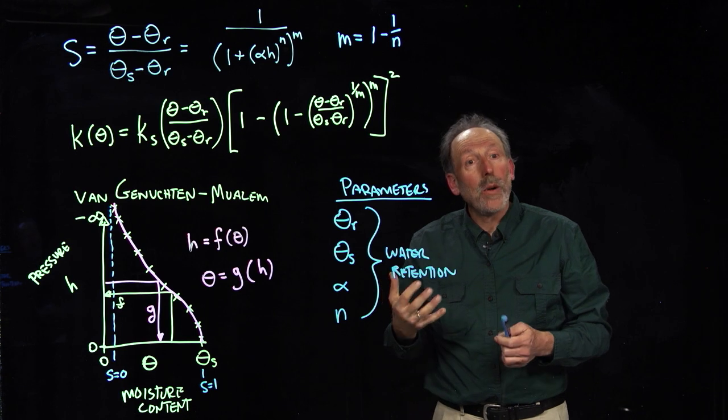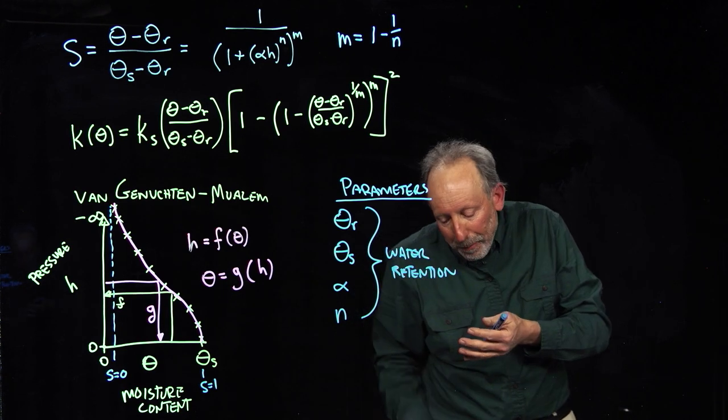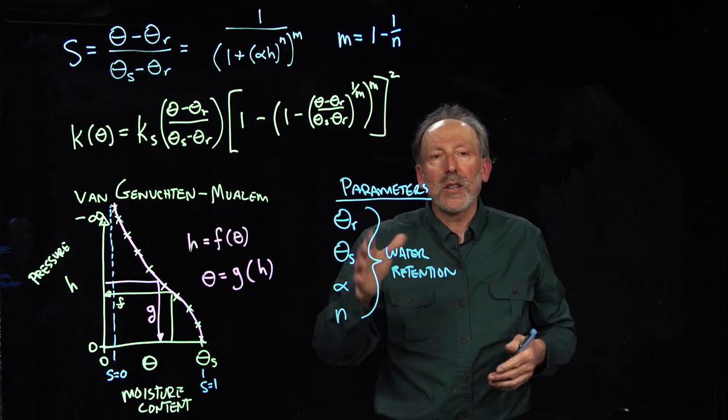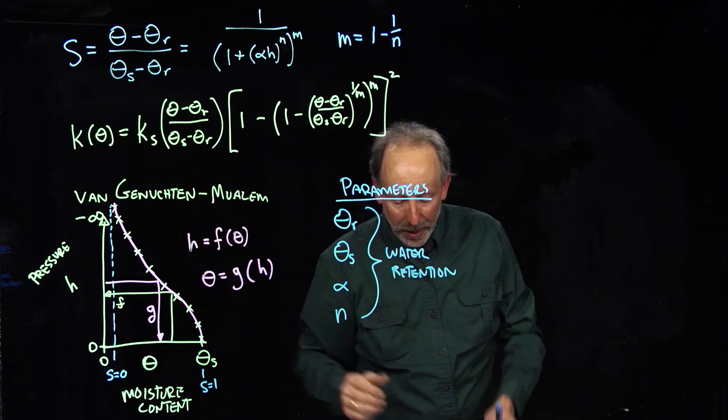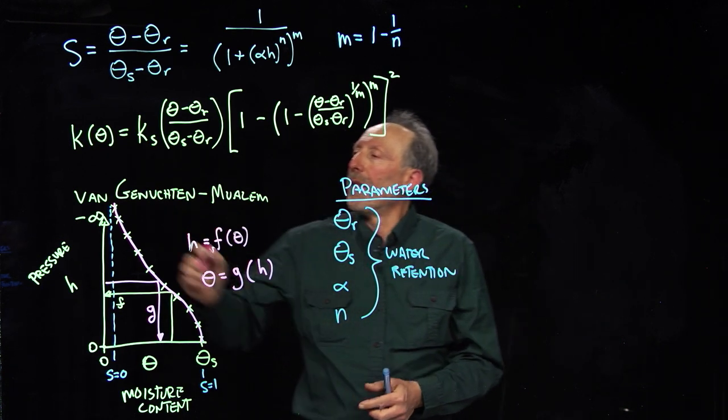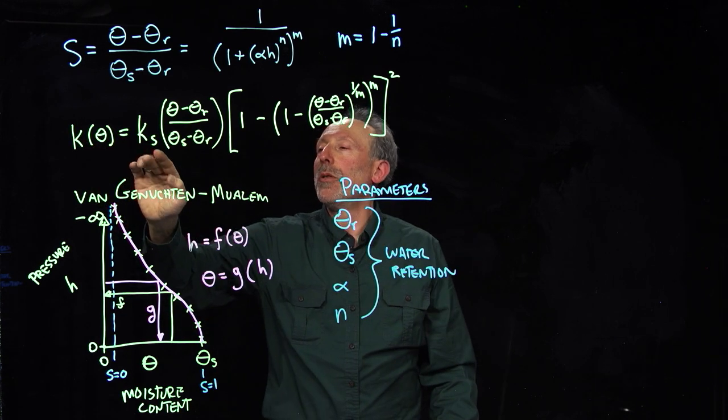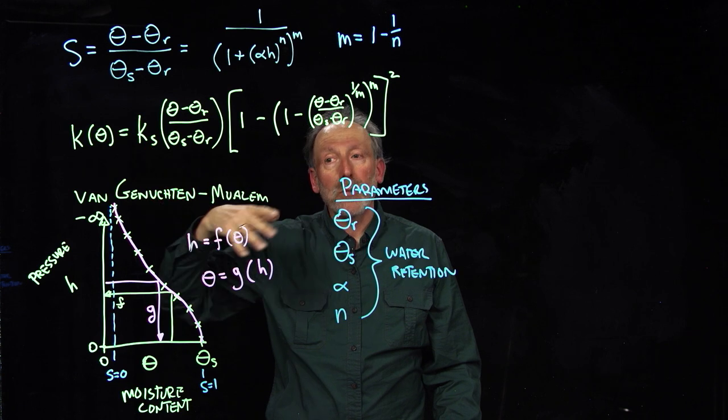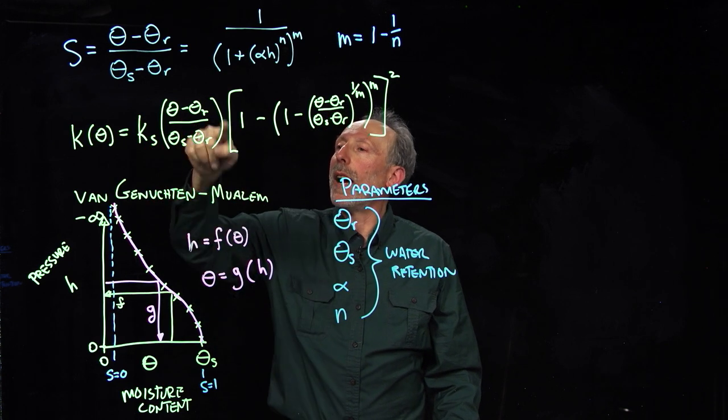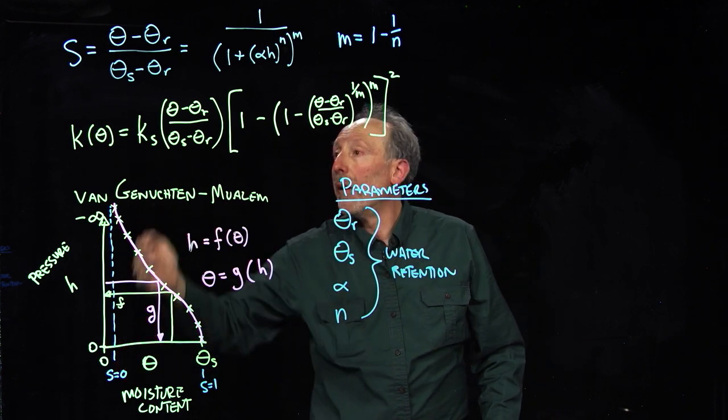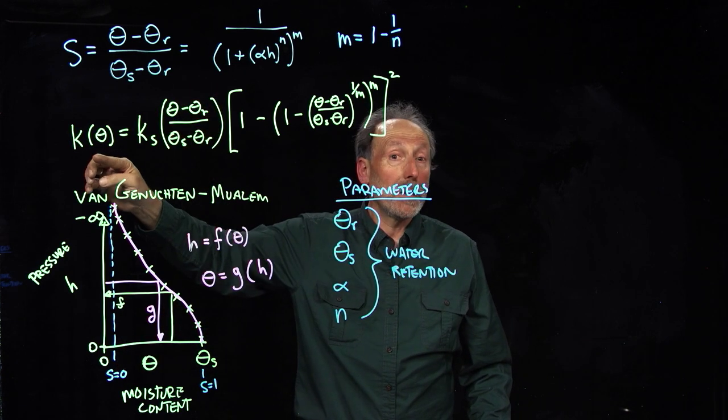Now, we said that the ability to move water through soil is also related to the same things that drive retention. And so, it turns out that you can represent conductivity here as equal to the saturated conductivity, that's when you have the column fully saturated, times the degree of saturation. So, when the degree of saturation goes to zero, this becomes zero, the conductivity becomes zero.